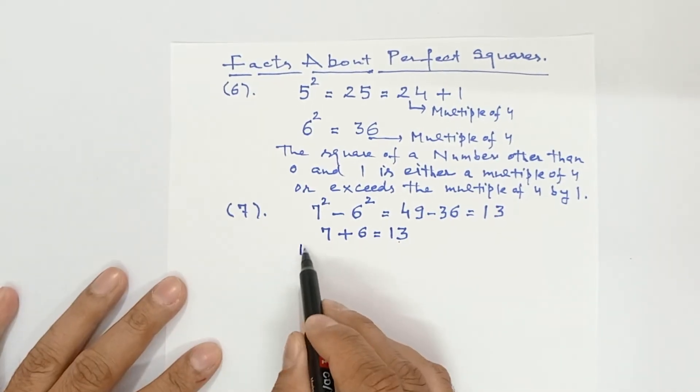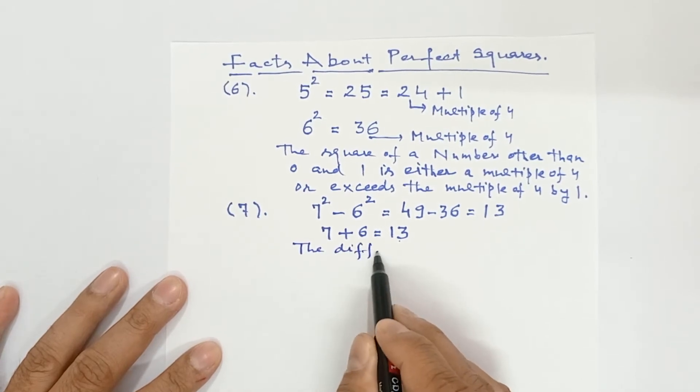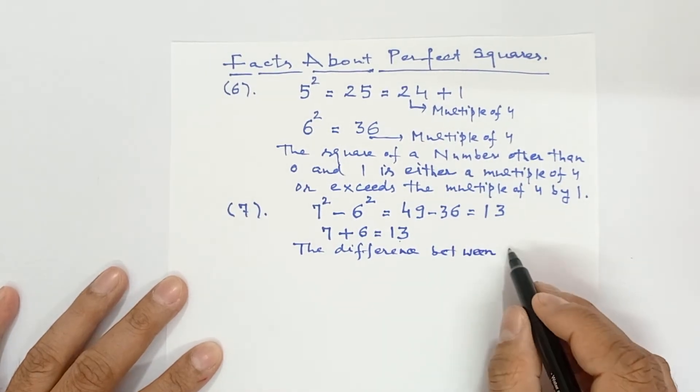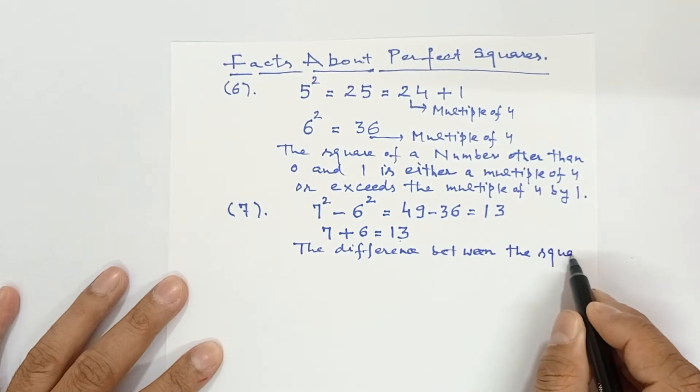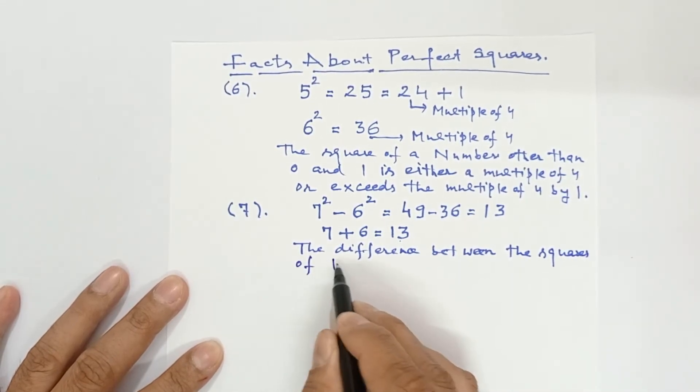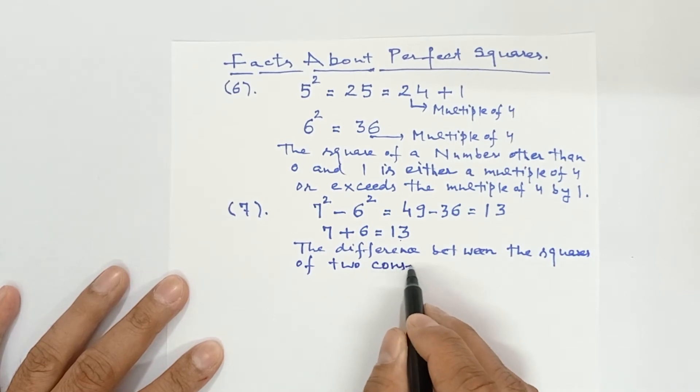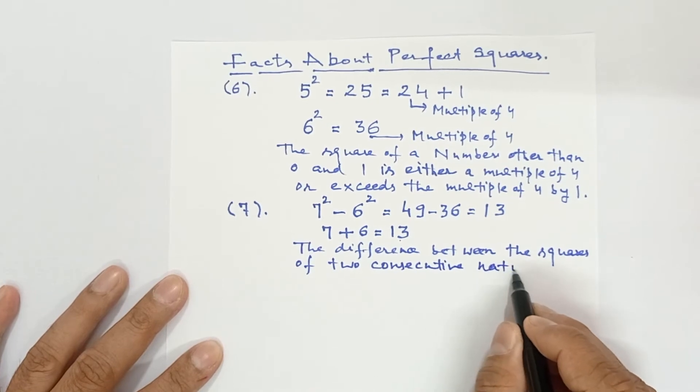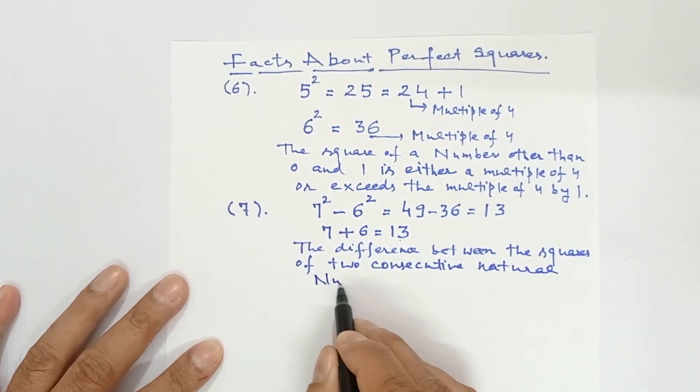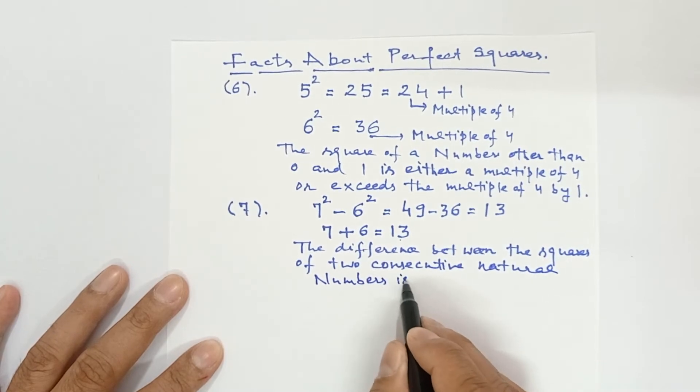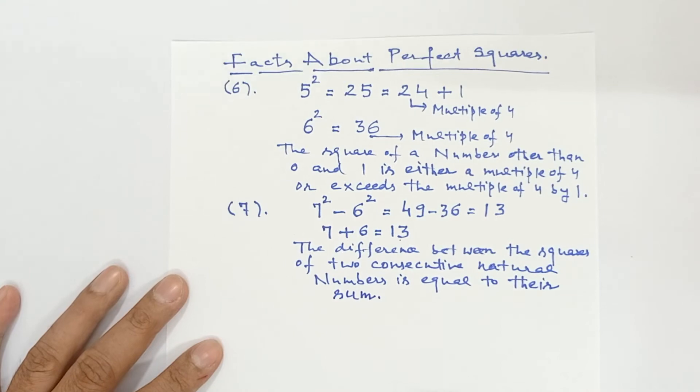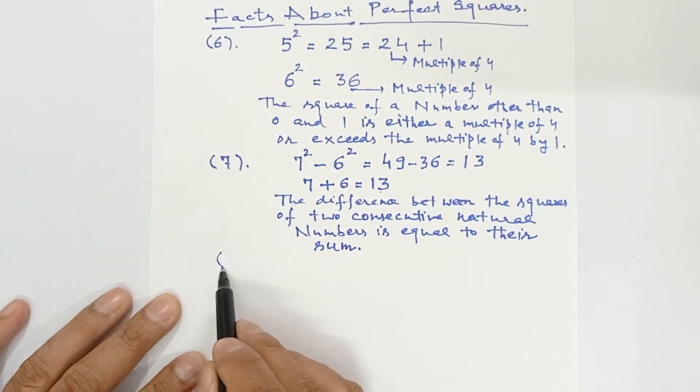So what fact will be there? The difference between the squares of two consecutive natural numbers is equal to their sum. You may check by taking more examples also. This fact will always be true.